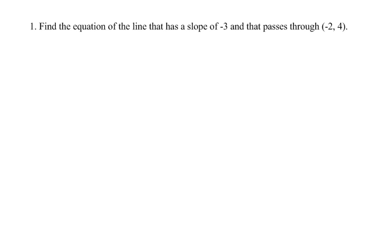The first one is find the equation of a line with a slope of negative 3 passing through negative 2, 4. If we pick my pen here, I would start with y equals mx plus b whenever in doubt with lines.